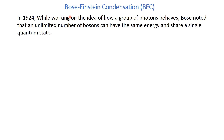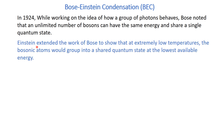The idea of Bose-Einstein condensation arose in 1924 when Bose was working on the group of photons. He noted that an unlimited number of bosons can have the same energy and share a single quantum state. Einstein extended the work of Bose to show that at extremely low temperatures, bosonic atoms would group into a shared quantum state at the lowest available energy state.